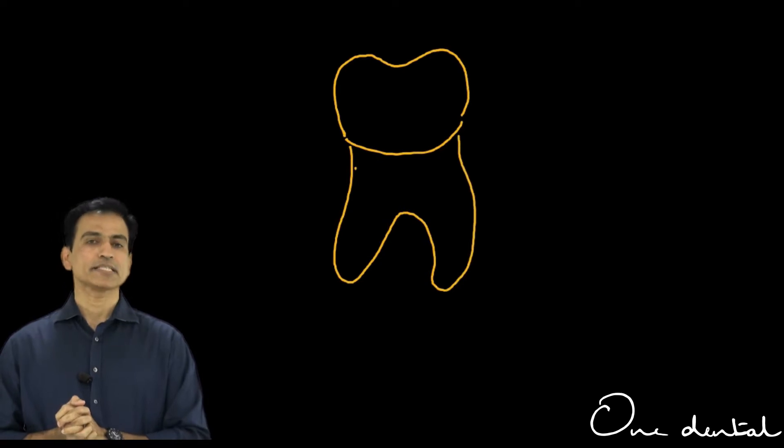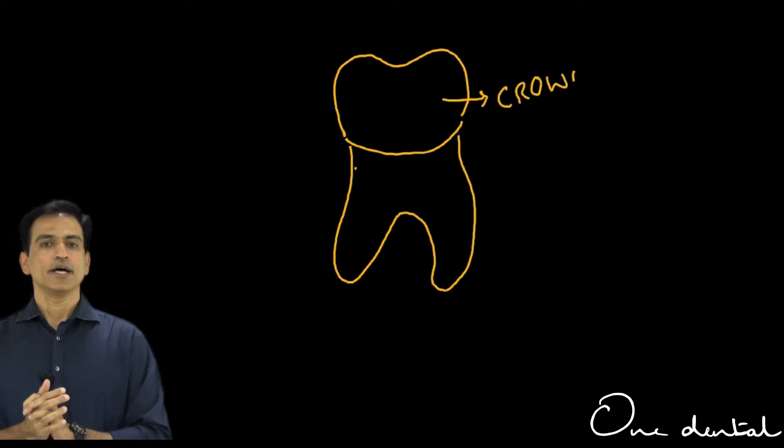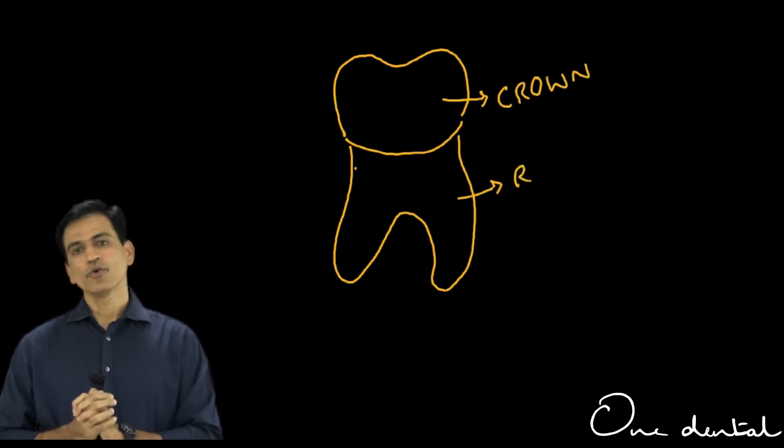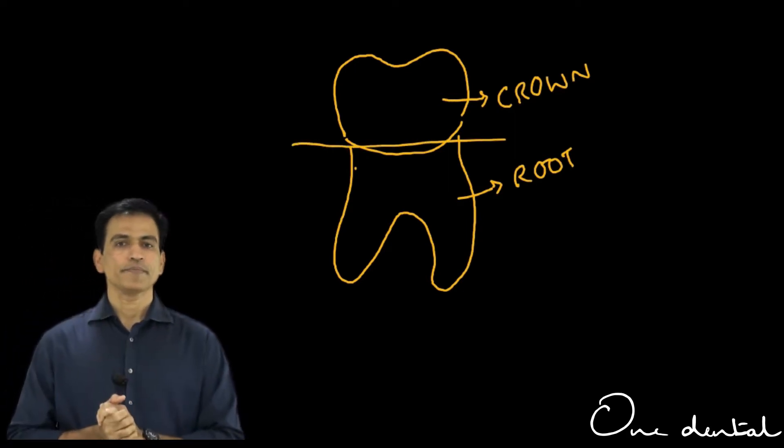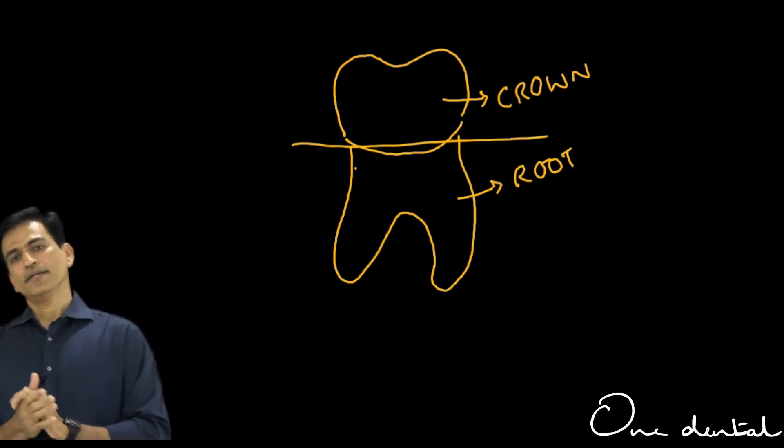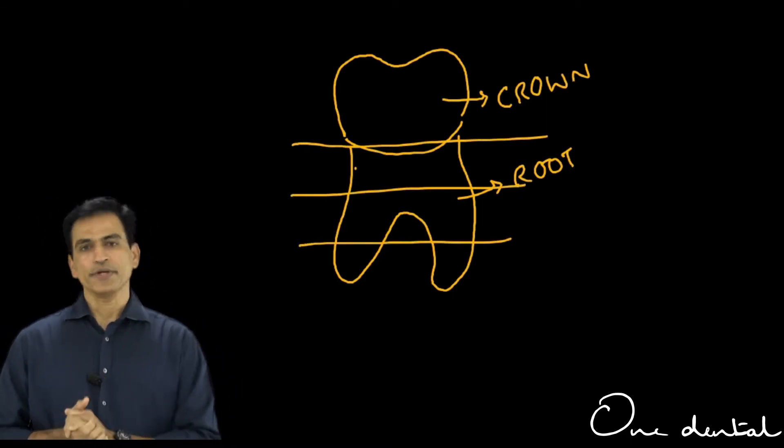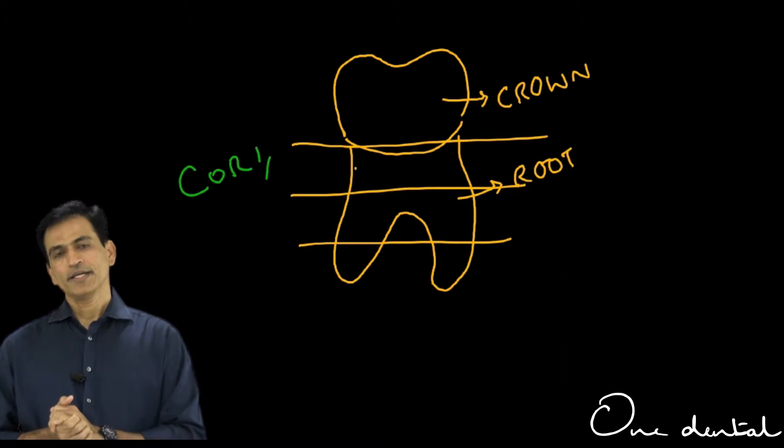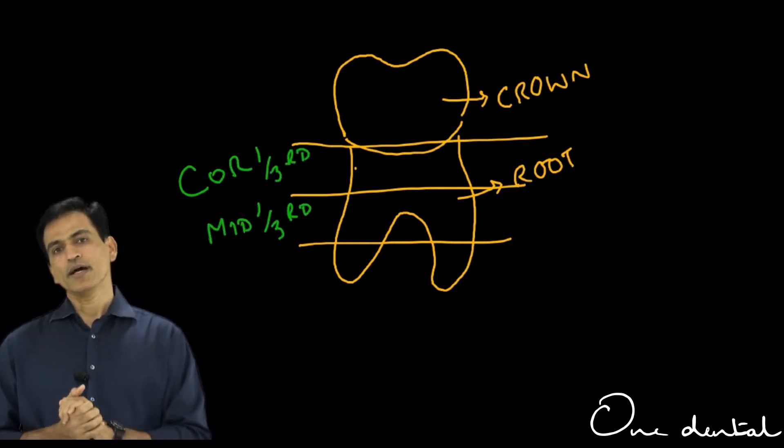One of the simplest and best ways of approaching a root canal is dividing the root canal or the root into three thirds: the coronal one third, the middle one third, and the apical one third. This is a segmental way of approaching to the root apex.